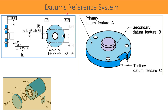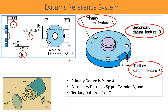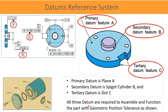Thus, three features we could identify as datum features or reference features. This datum plane, let us identify as datum A; the spigot cylinder axis as datum B; and the slot center as datum C. We have assembled these three datums in a particular order or sequence called datum precedence. Therefore, we call them primary datum A, secondary datum spigot cylinder axis B, and tertiary datum slot center C. To summarize, all three datums are required to assemble and function the cover part with geometric position tolerance.